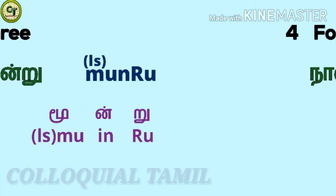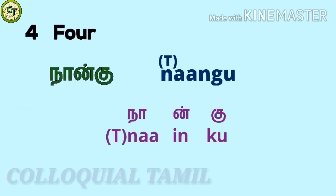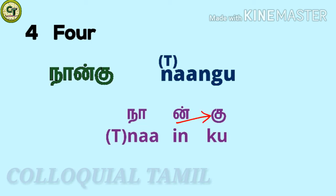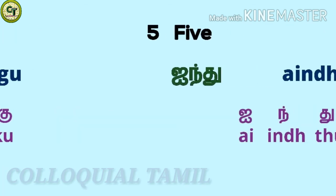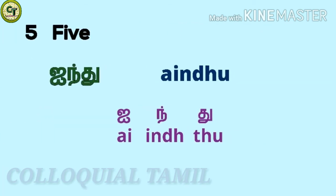For four: 'nangu'. Na — a long vowel letter. This 'na' belongs to a special group of na letters. I put 't' to represent it. To know how to pronounce it, see the pronunciation table at the beginning of the video. N with a consonant, ku — a short letter together: nangu.